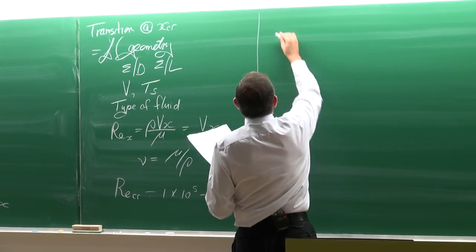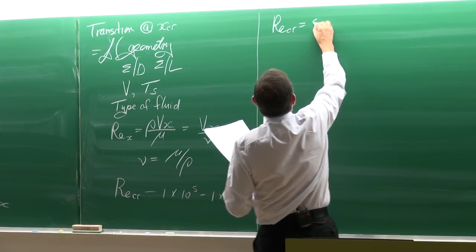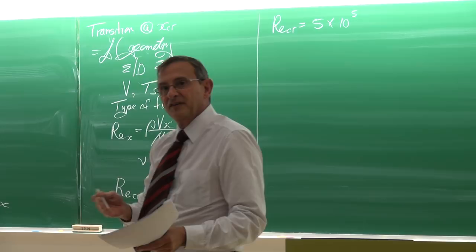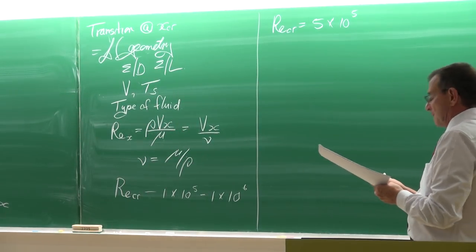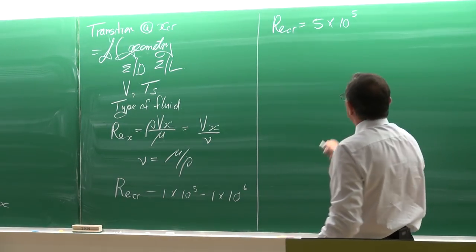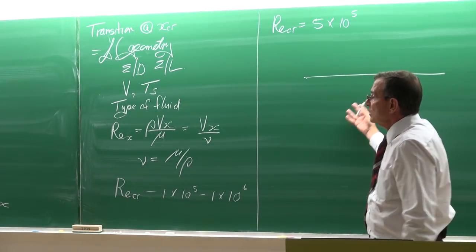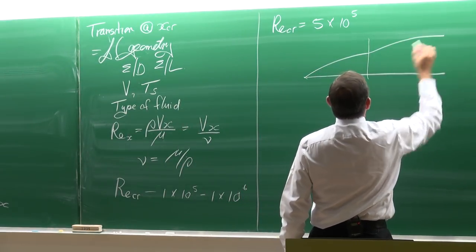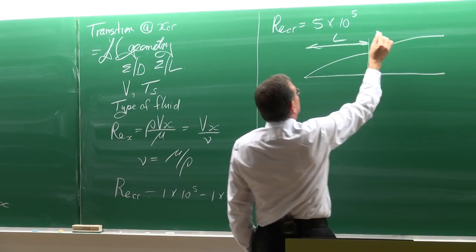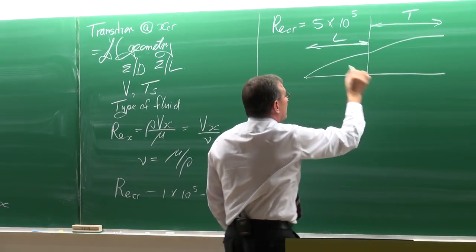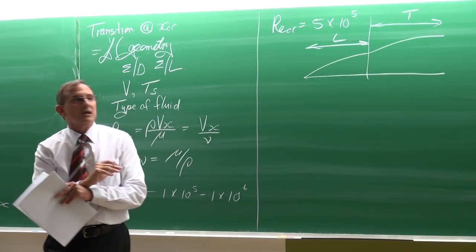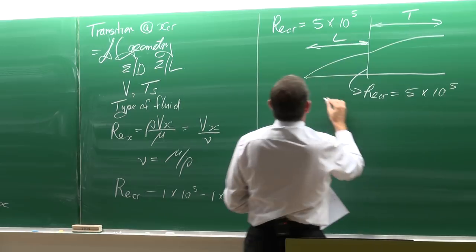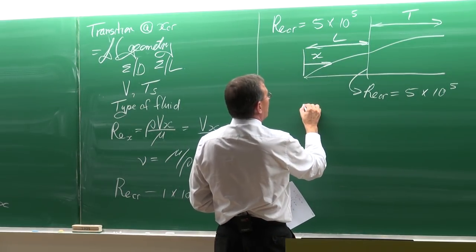In this module we are going to choose the critical Reynolds number as 500,000. If Re_x is smaller than 500,000, the flow is laminar; if it's larger, the flow is turbulent. We simplify by saying there is a direct transition from laminar to turbulent — there is no gradual transition zone — and x_critical is the distance from the leading edge where Re_x equals 500,000.